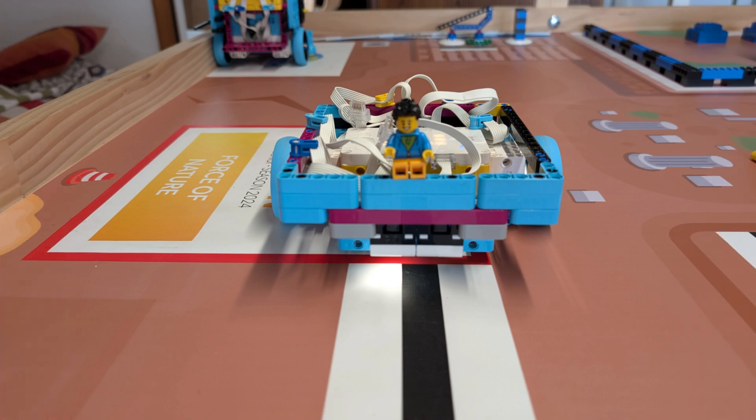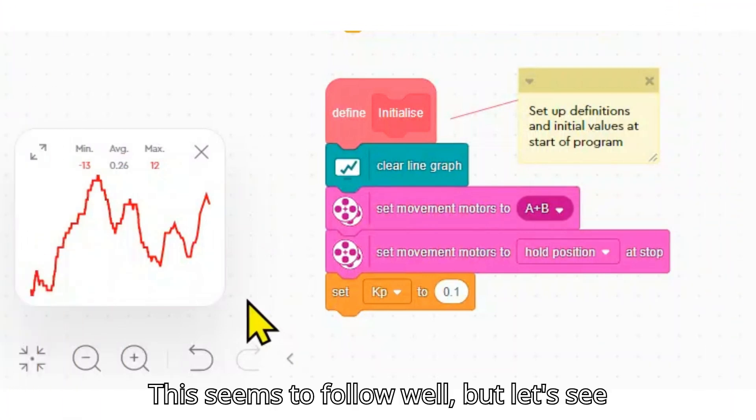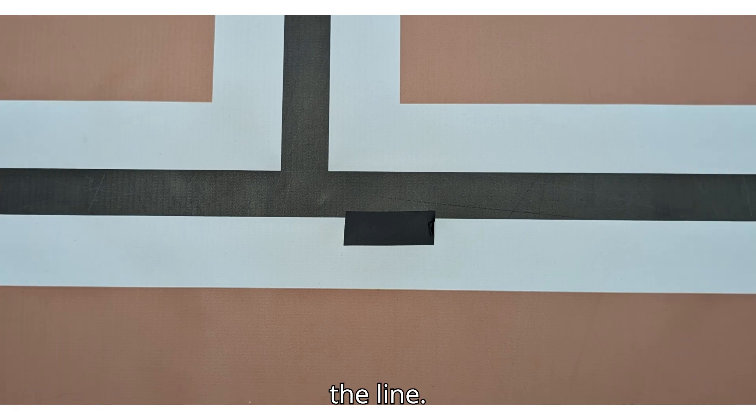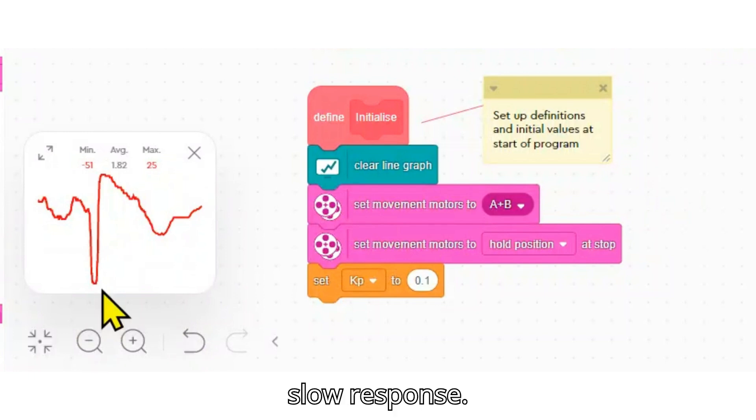Let's try 0.1. This seems to follow well but let's see how it responds to a disturbance. To make a disturbance we can stick some tape on the line. Here we see the disturbance followed by a slow response.